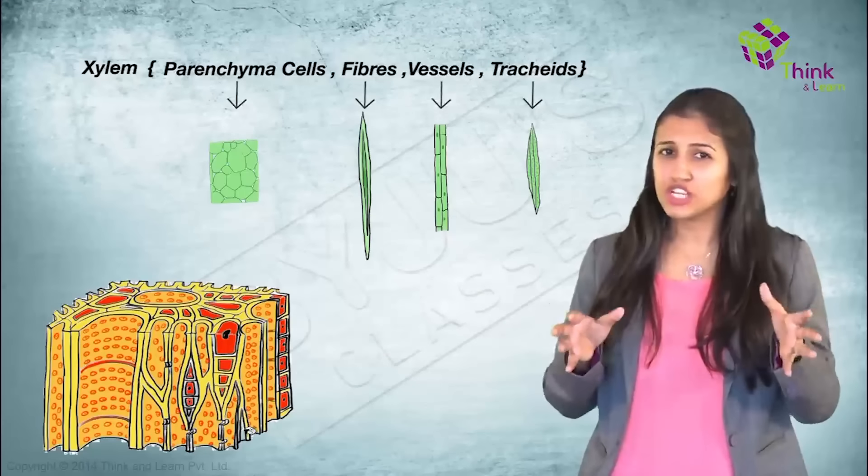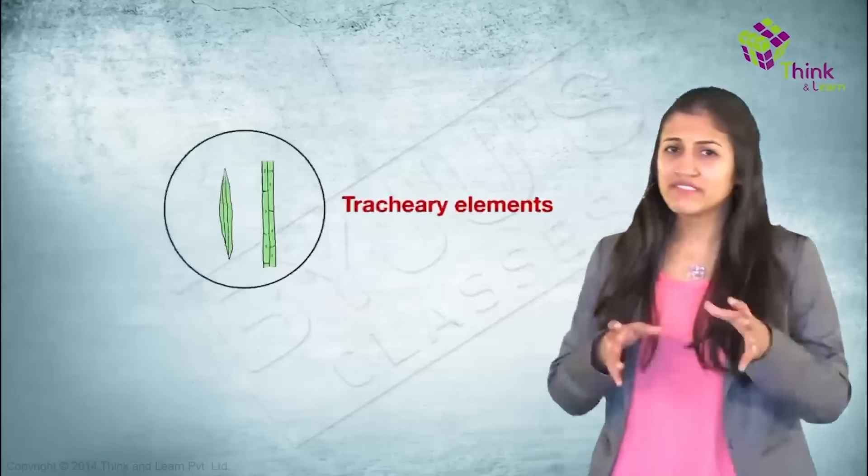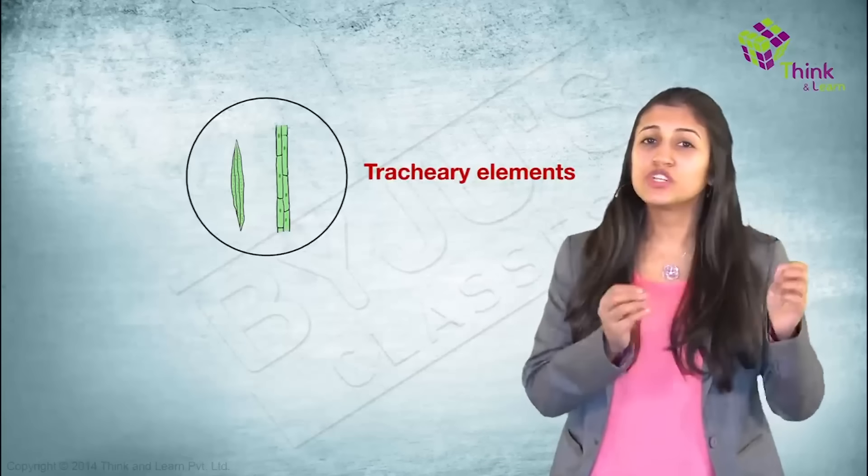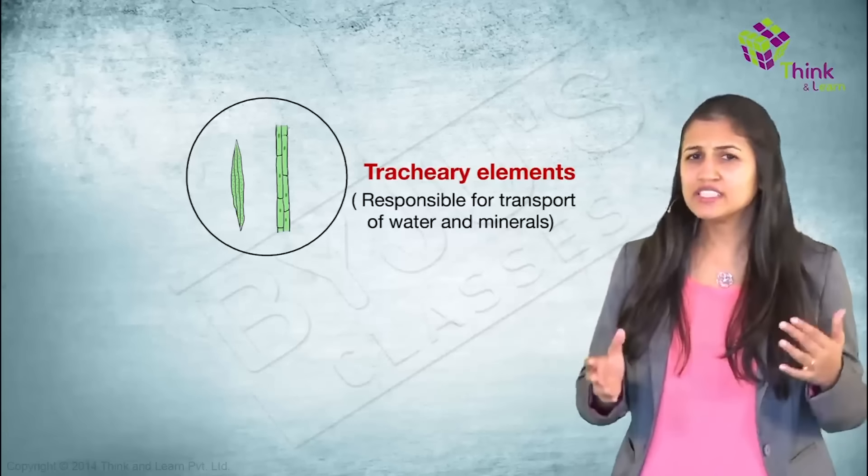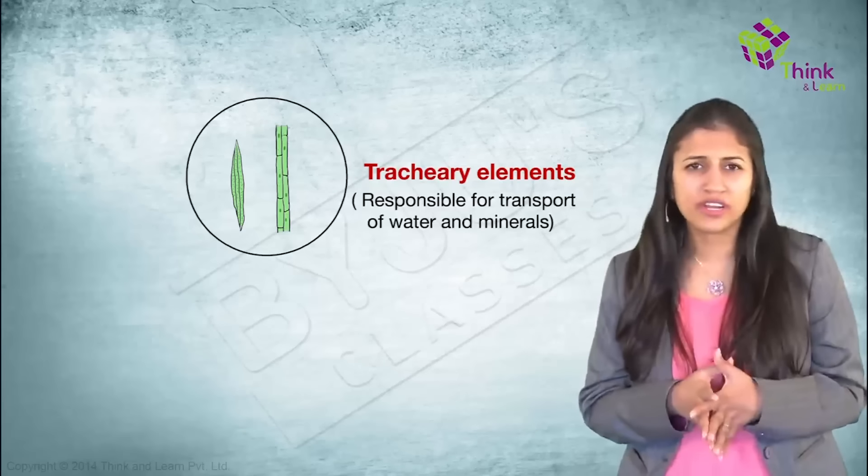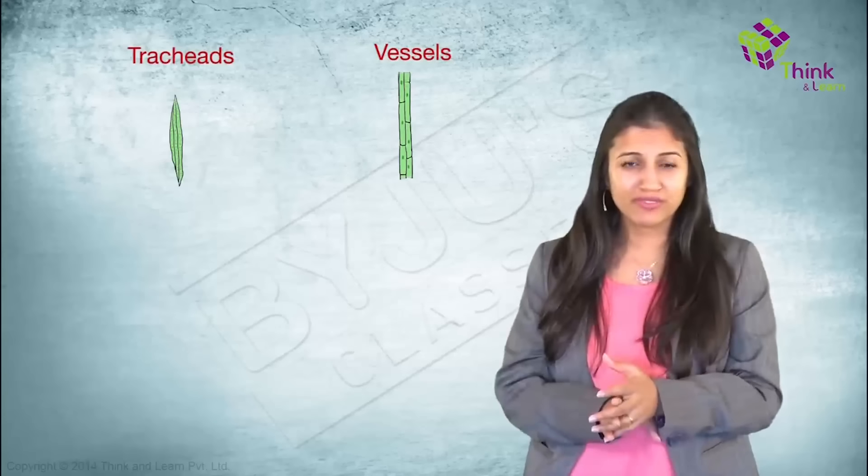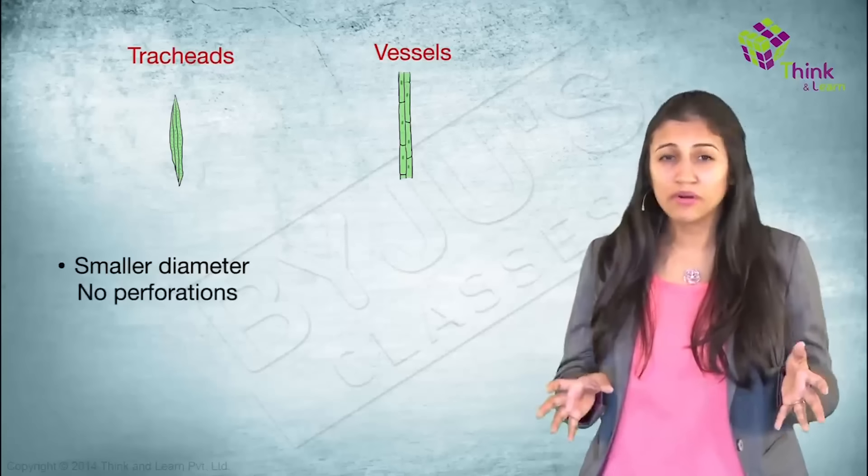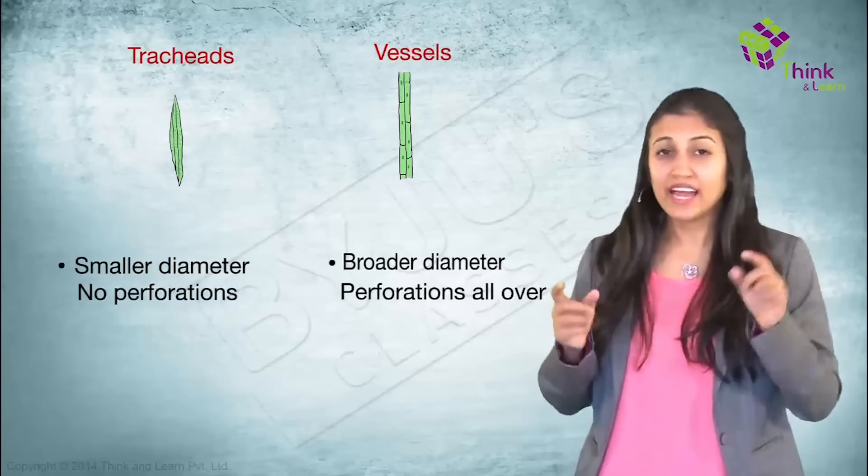The xylem does the actual transportation through tracheids and vessels and together they are called tracheary elements. Now, tracheids and vessels are both long tube-like elongated cells in the xylem of vascular plants through which the actual transport of water and mineral salts happen. Both of them will be dead at maturity and since both of them apparently do the same thing, you must be wondering what the difference could be. Why can't the plant just have one of them? The fact is that there are differences between the two. One, look at this and you can spot the difference yourself. One, tracheids have a much smaller diameter compared to vessels and they do not have perforations all over. Vessels are broader, they have perforations all over. This makes vessels more efficient at transporting water.